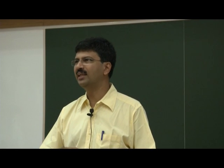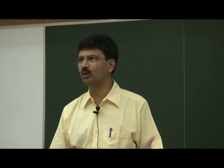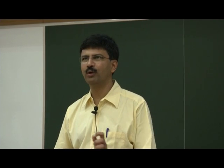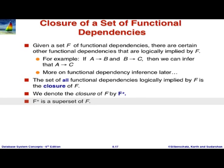The set of all functional dependencies logically implied by a given set F is called the closure of F, denoted F+. Every trivial dependency is in here. The closure is very large, and in general you don't want to compute the whole set — but conceptually it's important to understand. F+ is a superset of F; everything in F has to be in the closure.